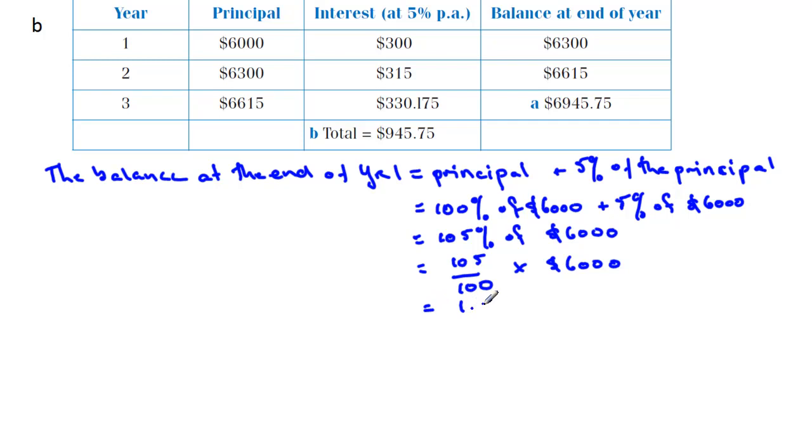And it looks like this: 1.05, if you put that in your calculator, that's what that becomes, times $6,000, and that equals $6,300. And there it is up there. Look at that. 100% is this one, 5% is this one. 105% multiplied by the principal gives you the balance very, very quickly.